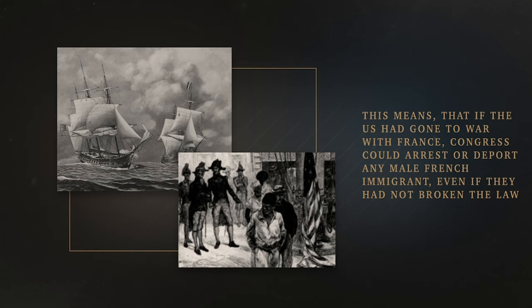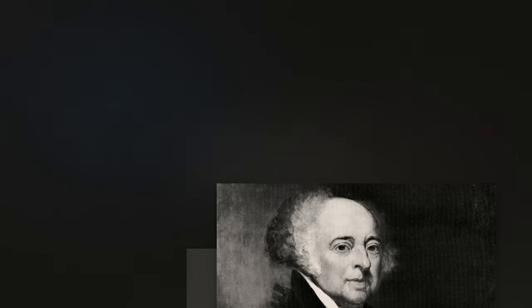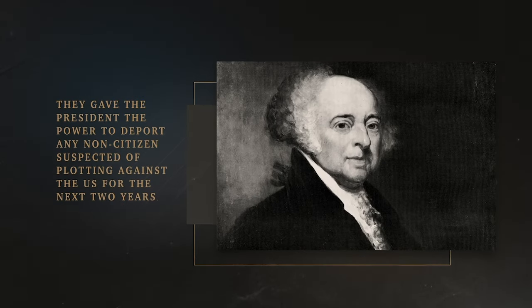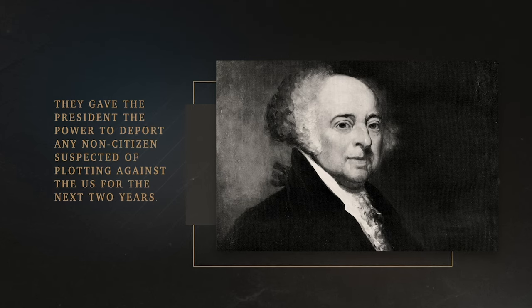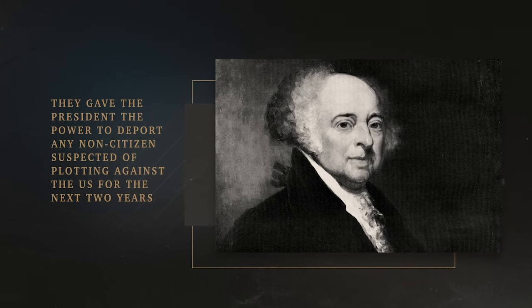This means that if the U.S. had gone to war with France, Congress could arrest or deport any male French immigrant even if they had not broken the law. And finally, they gave the President the power to deport any non-citizen suspected of plotting against the U.S. for the next two years. Because the U.S. didn't end up going to war with anyone, and due to the time constraints on the Alien Acts, no immigrants were actually deported. However, because most immigrants supported the Democratic-Republican Party, party growth slowed as a result of the Alien Acts.